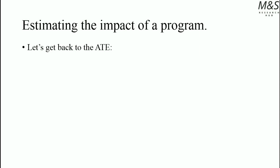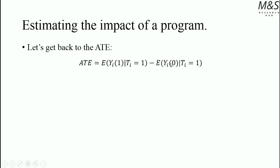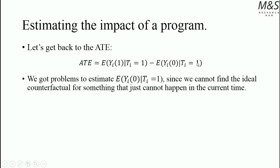When estimating the impact of a program, we need to get back to the Average Treatment Effect, which in the introduction we defined as the difference in expected outcomes. First, we get the expected outcomes for individual A when treated, given the treatment, minus the expected outcomes for the same individual when not treated but the treatment has been given. We have problems estimating the counterfactual, since we cannot find the ideal counterfactual for something that cannot happen in the current time, so we need to estimate it.